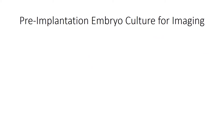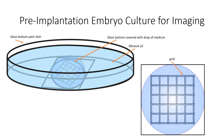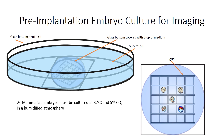Following collection of pre-implantation embryos, they are cultured in glass-bottom petri dishes in which a drop of medium is covered by a specific mineral oil which allows gas exchange. A pre-implantation embryo is completely round, so a grid is attached at the bottom of the dish and the embryos are placed inside the grid. This prohibits movement of the embryo, which would otherwise move out of focus. Embryo culture is carried out similarly to mammalian cell culture at 37 degrees Celsius and 5% CO2 in a humidified atmosphere.